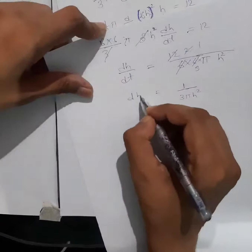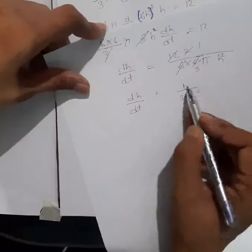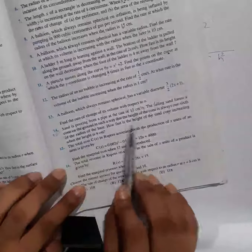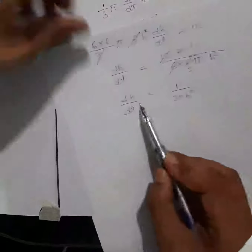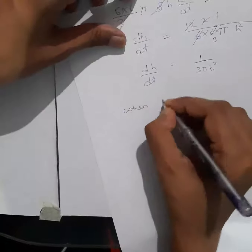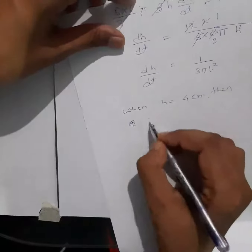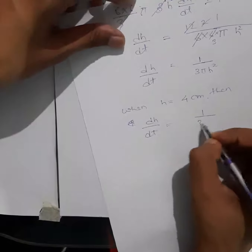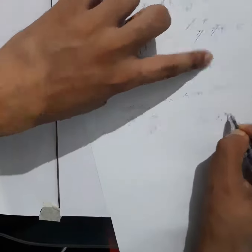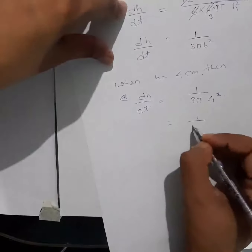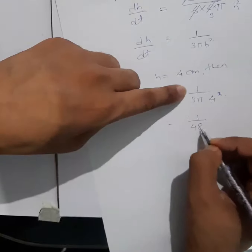We have dh/dt = 1/(3πh²). Wait, simplifying more carefully: 1/3 · π · 36 · 3h² · dh/dt = 12 gives 36πh² · dh/dt = 12, so dh/dt = 12/(36πh²) = 1/(3πh²). When h = 4 cm, dh/dt = 1/(3π·16) = 1/(48π) centimeters per second.